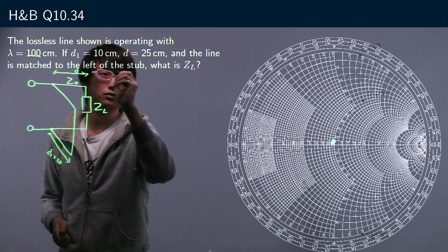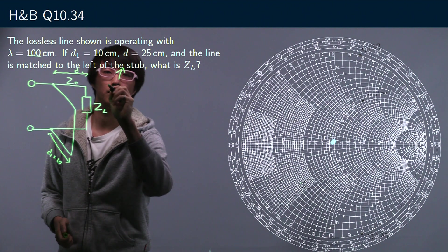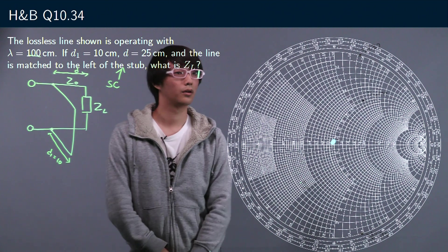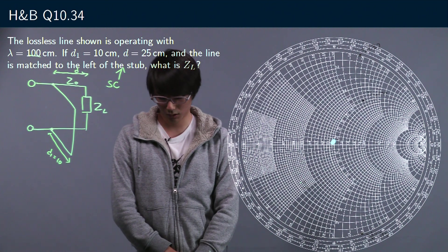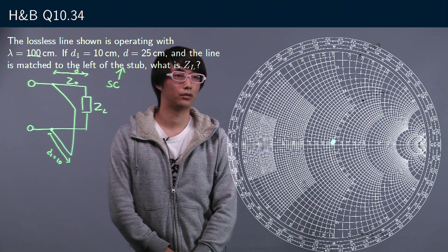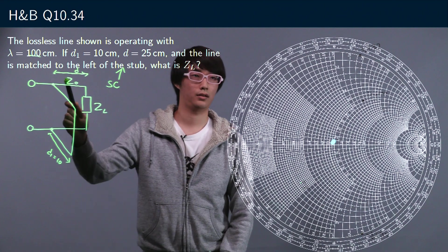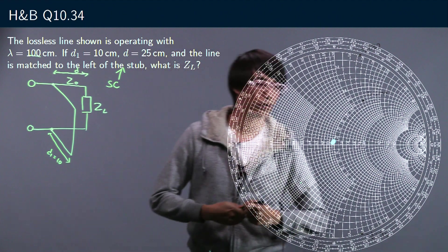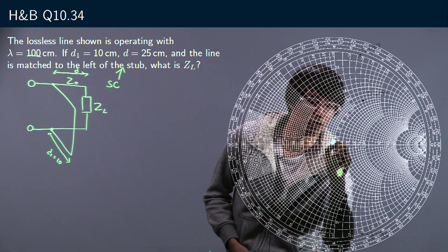So this should actually say that this is a short circuit stub. Working with the information we have, first of all, what we're gonna do is we're gonna use the fact that the line is matched to the left of the stub. We're gonna find the origin here.